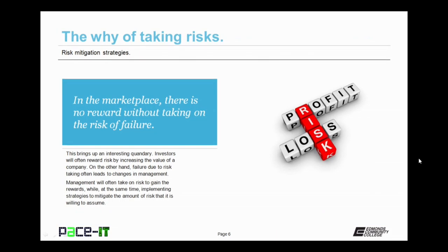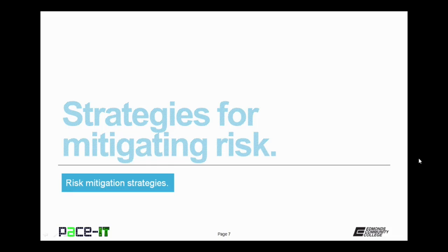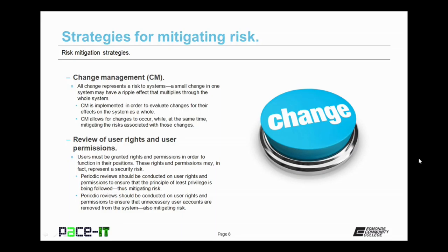In the marketplace, there is no reward without taking on the risk of failure. This brings up an interesting quandary. Investors will often reward risk by increasing the value of a company. On the other hand, failure due to risk taking often leads to changes in management. This leads to a situation where management can be both rewarded and punished for taking on risk, which makes management very uneasy. So management will often take on risk to gain the rewards while at the same time implementing strategies to mitigate the amount of risk that it is willing to assume.